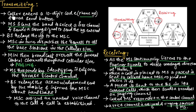The first step is that the caller enters a 10-digit code, which is the phone number, and presses the send button. Next, the mobile station scans the band to select a free channel and sends a strong signal to send the number which is entered.